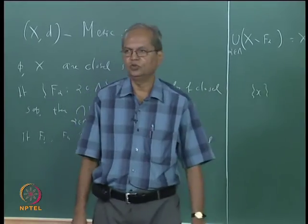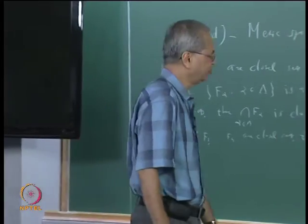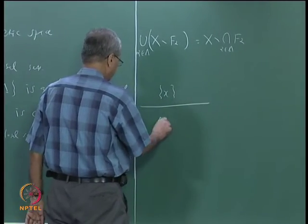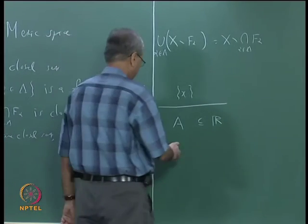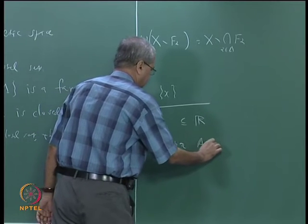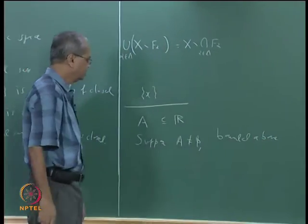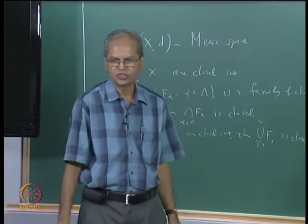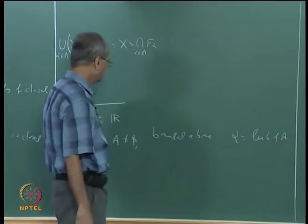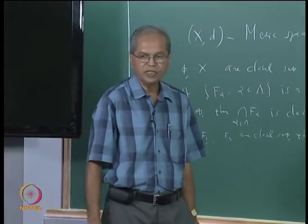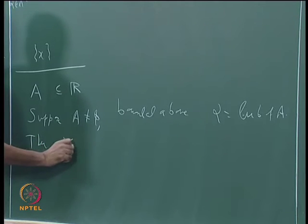The process of removing a countable family of open intervals from the real line can lead to fairly complicated closed sets — we shall see one example shortly. First, let me make one more comment. Suppose A is a non-empty subset of the real line that is bounded above. By the least upper bound axiom, it must have a least upper bound. Let alpha be the lub of A. Then alpha must be in the closure of A.